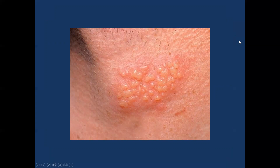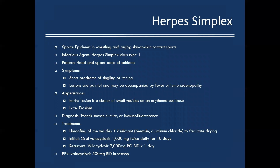Looking at this image — you see a grouping of vesicles, fluid-filled, on an erythematous base. This is herpes simplex. Herpes simplex is epidemic in wrestling and rugby due to the high skin-to-skin contact. The infectious agent is herpes simplex virus, typically type 1, and the pattern is distributed on the head and upper torso of athletes.